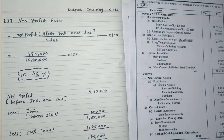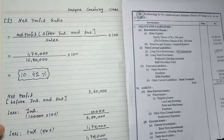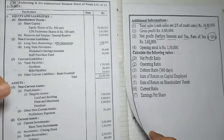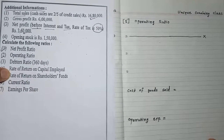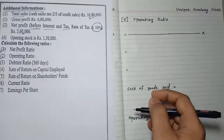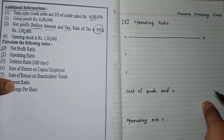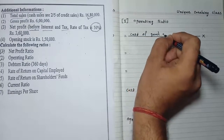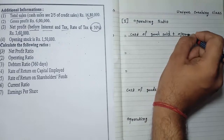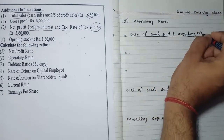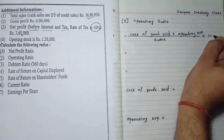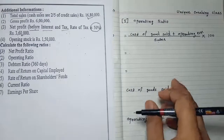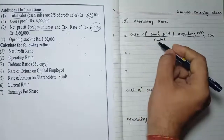Now the second ratio — operating ratio. Operating ratio is also part of profitability ratios. Its formula is: cost of goods sold plus operating expenses, divided by sales, multiplied by 100.